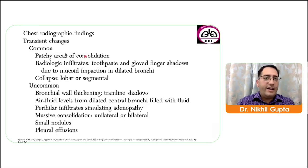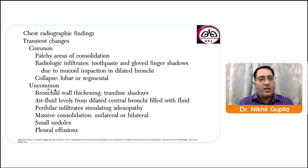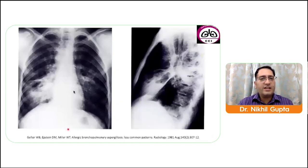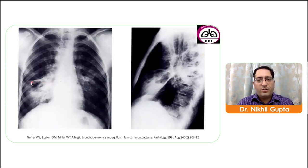Transient findings can be divided into common and uncommon. Common findings: patchy consolidation, radiological infiltrates, and collapse. Uncommon findings: bronchial wall thickening, air-fluid levels from dilated bronchi, perihilar infiltrates simulating adenopathy, massive consolidation, small nodules, and pleural effusions. A chest X-ray showing allergic aspergillosis with right middle lobe obstruction progressed to pneumonia and cavitation, which also cleared following steroid therapy.